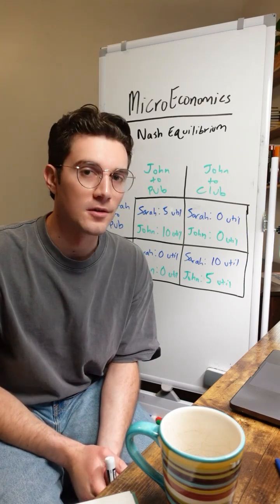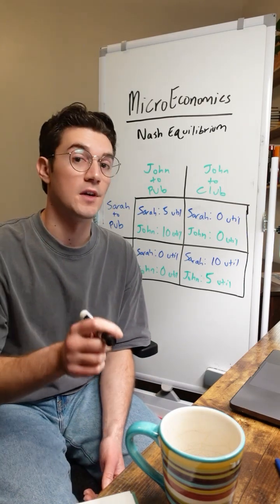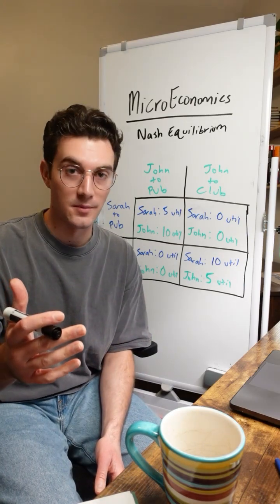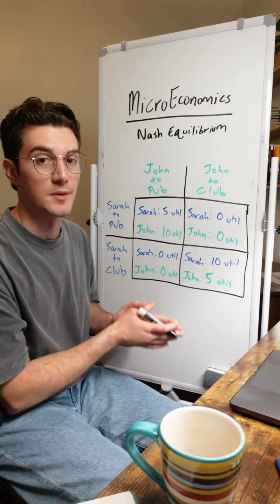And this is why I encourage students to go cell by cell and see if either party is incentivized to switch their strategy. Because if they are, that's not going to be a Nash equilibrium. And you have to go cell by cell because there might actually be two Nash equilibriums at play.